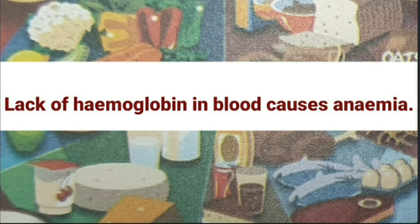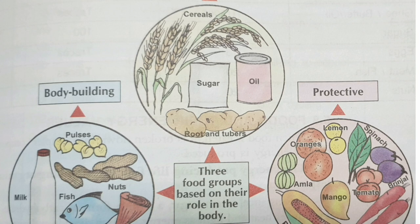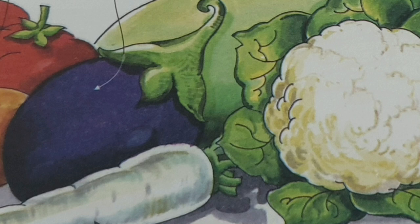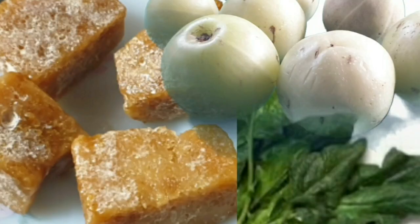Anemia is a deficiency disease caused by a deficiency of hemoglobin in the blood. Nutrients mix with our blood to keep us healthy. The important nutrients essential to our body are carbohydrates, proteins, fats, vitamins, and minerals. Minerals are inorganic substances present in our food, required in small quantities for proper functioning of various body systems. We obtain minerals through our diet. Iron is required for the formation of hemoglobin. Calcium, iron, phosphorus, and sodium are some minerals found in food. We should eat jaggery, amla, and leafy vegetables to increase hemoglobin.